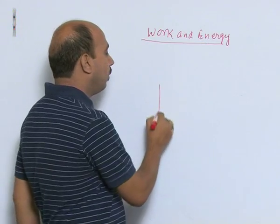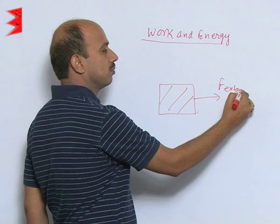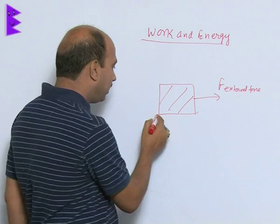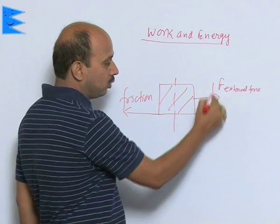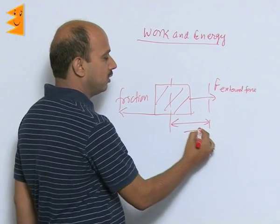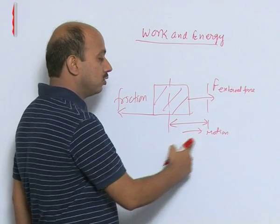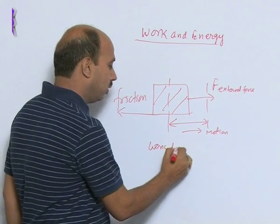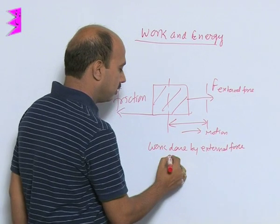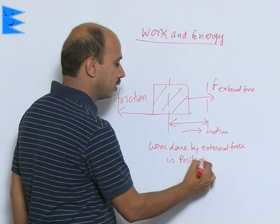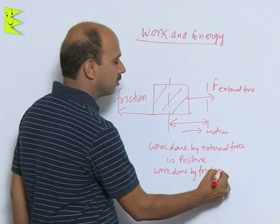Suppose a body is going this way. You are applying an external force this side, and frictional force is acting the opposite side. The body is moving in this direction. Work done by external force is positive, whereas work done by friction is negative.